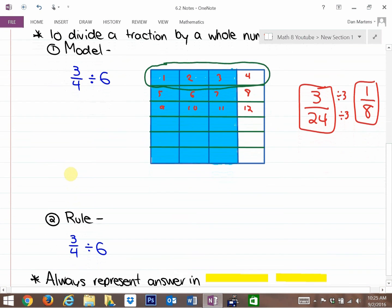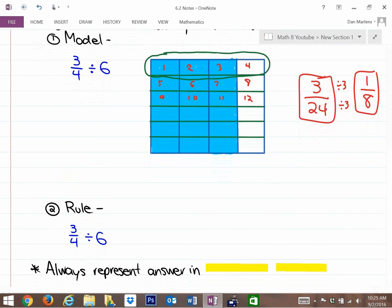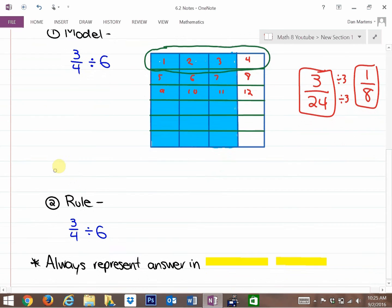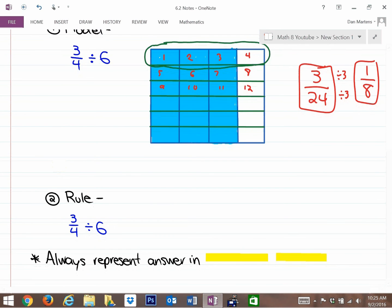If we divided 3/4 of a cake between six people, you would get 1/8. The second method for solving these is to use a rule. If you did your study guide previous to this lesson, you noticed what the rule is.